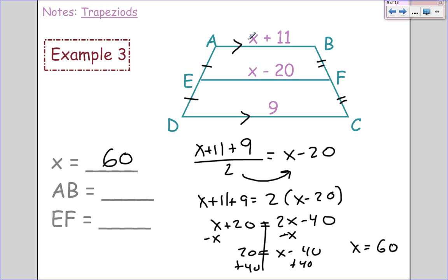So AB will be 60 plus 11 is 71. EF will be 60 minus 20, which is 40.